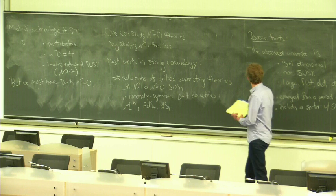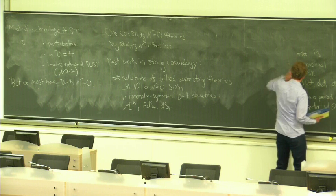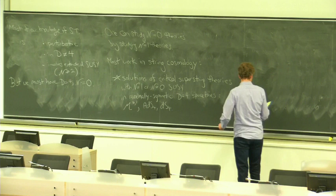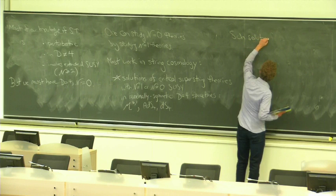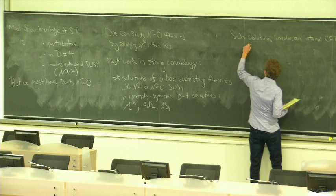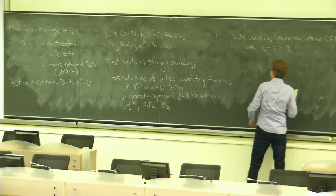One would love to find space times that are more interestingly dynamic like inflationary space times, but the standard strategy is to begin with something simple like a de Sitter vacuum and then gradually study something a little bit more involved like a nearly de Sitter vacuum, such as an inflationary solution. So what we're going to wrestle with is trying to figure out where we can arrive at such solutions. So how are we going to build solutions of this kind?